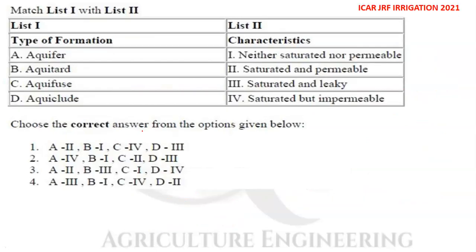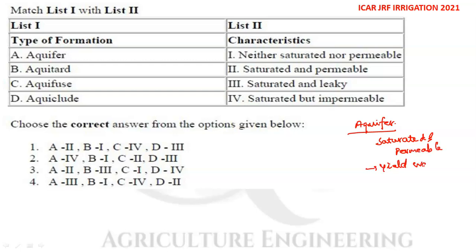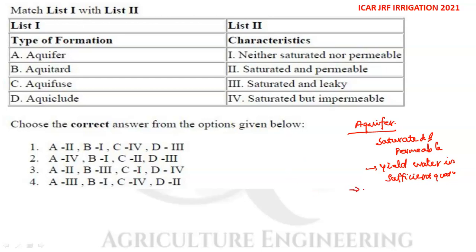The next question asks to match aquifer types. An aquifer is saturated and permeable; it not only stores water but also yields water in sufficient quantity. The best examples of aquifers are unconsolidated deposits of sand and gravel.